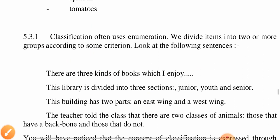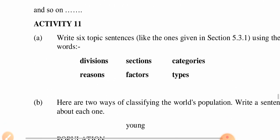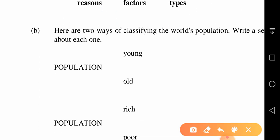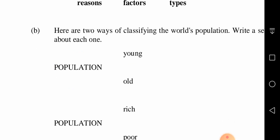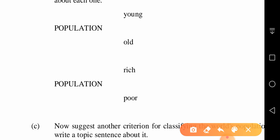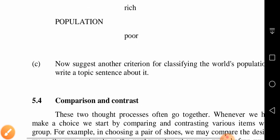Other enumeration phrases we can use: 'There are three types of vehicles,' 'there are three factors causing fire,' 'there are four reasons for road accidents,' and so on — meaning you are going to classify the reasons. For example, 'the population can be divided into the young and the old,' or 'there are two types of people in the world: the rich and the poor.' You can use any criteria to classify things.